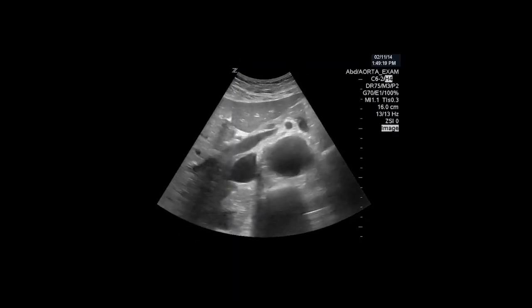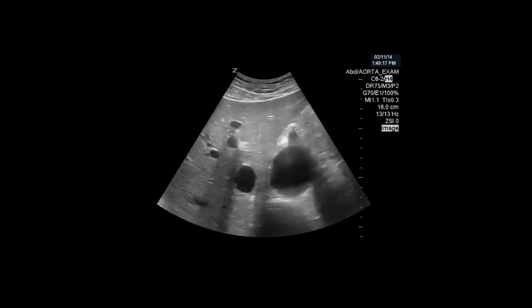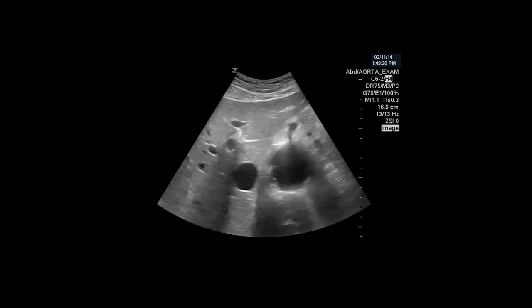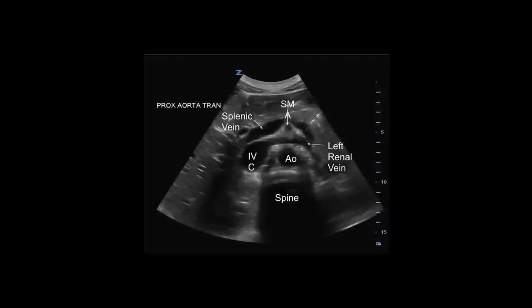Here's a clip demonstrating the celiac trunk with its branches. After identifying the celiac trunk, move your probe inferiorly very slowly. The superior mesenteric artery is just inferior to the celiac trunk and can be easily missed. The SMA rises from the anterior abdominal aorta and runs along the anterior aorta. Just after bifurcating from the aorta, the SMA is in close relation to two veins imaged here. The splenic vein is visualized draping anterior to the SMA, and the left renal vein can be seen traveling between the SMA and the aorta and joins the IVC.